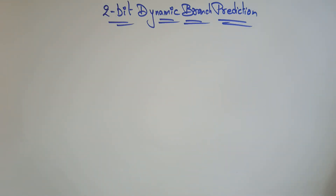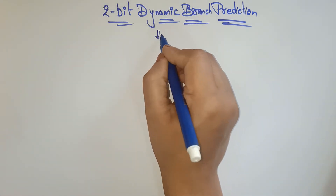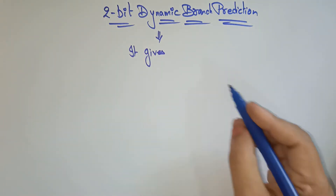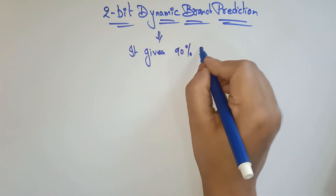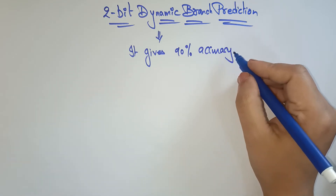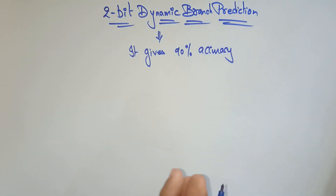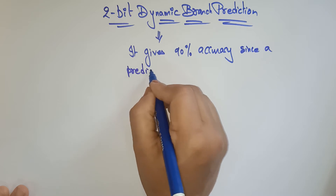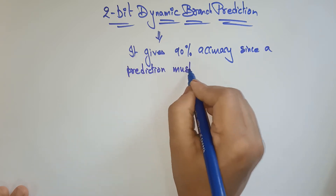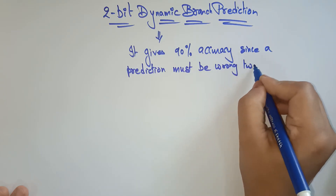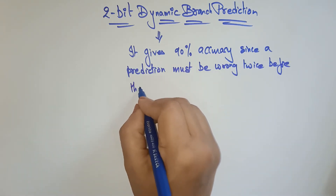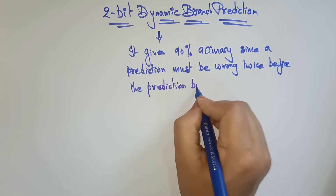Welcome back. Let's see the 2-bit dynamic branch prediction. In the previous video I explained about 1-bit dynamic branch prediction. We are going for 2-bit dynamic branch prediction because it gives 90% accuracy, since a prediction must be wrong twice before the prediction bit is changed.